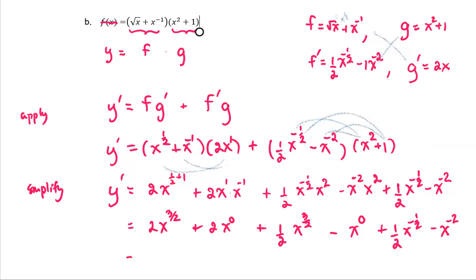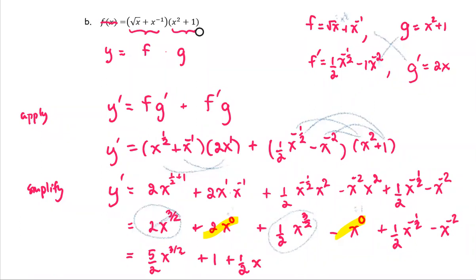Next we're going to collect the like terms. For the first group, we look at the coefficient of x to the power 3 halves. We have 2 plus one half, which is 5 over 2, of x to the power 3 halves. For the x to the power 0 group, which equals 1, we have 2 times x to the power 0 giving 2, and x to the power 0 giving 1, so we get plus 2 minus 1, which returns plus 1. The last two terms have no like terms, so we carry them: plus one half x to the power one half, and minus x to the power negative second.